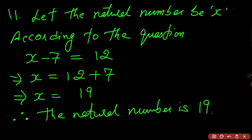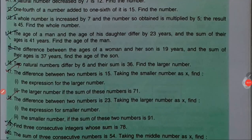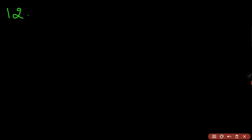I hope you have understood number 11 as well. Going to question number 12. Question number 12 reads as: one fourth of a number added to one sixth of it is 15. Find the number. I think we have done this kind of sum in part 1 of the video, but let us try to solve number 12. Let the number be x.